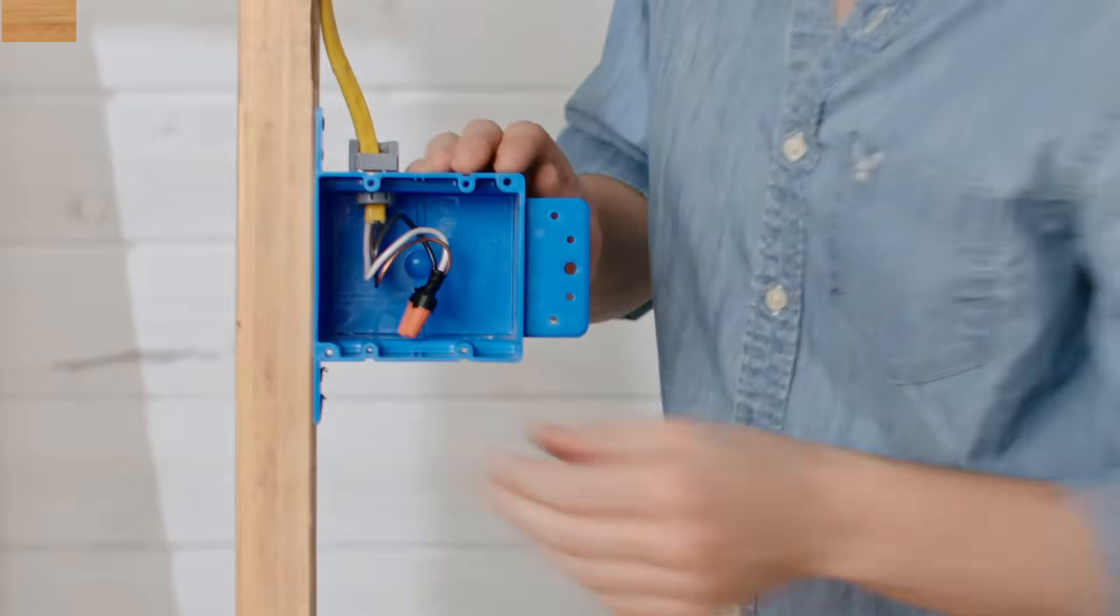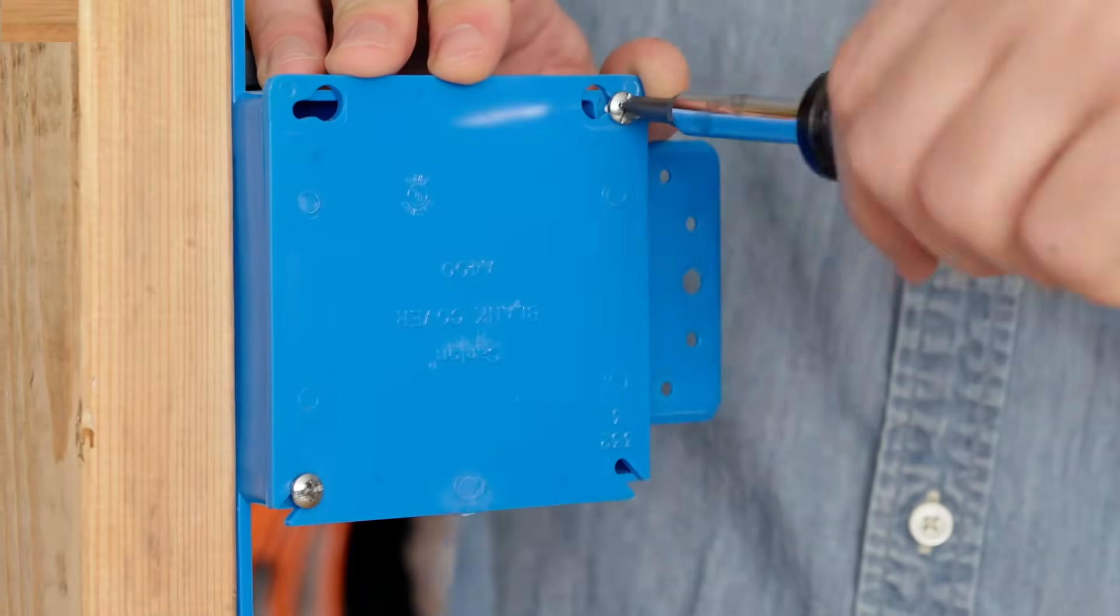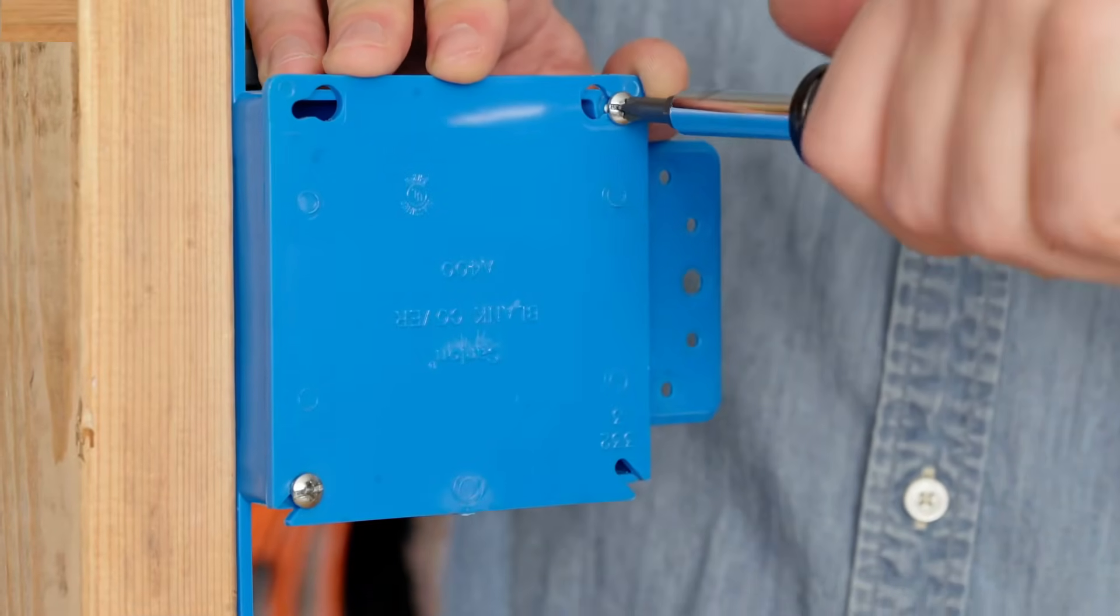To finish the job, install a blind cover and tighten the screws. It's important to keep this box accessible so don't cover it with drywall, wallpaper, or paneling.